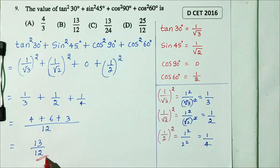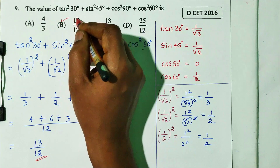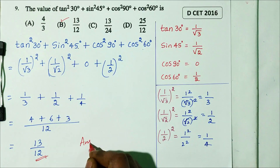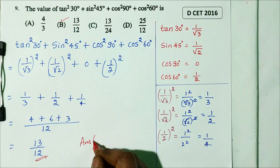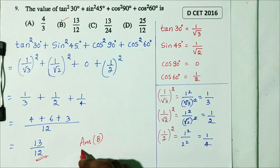The answer is 13 divided by 12. Option B is the right answer. DCT 2016 question.